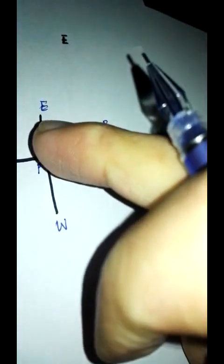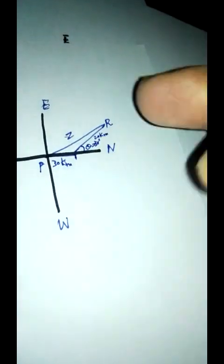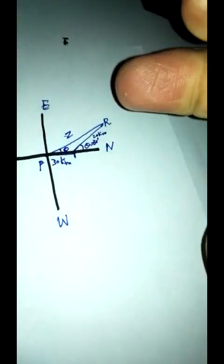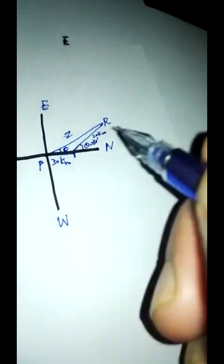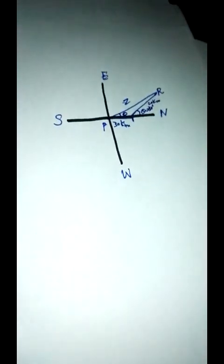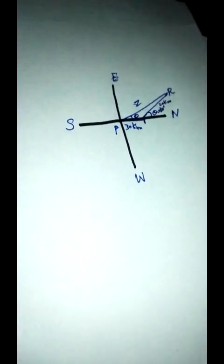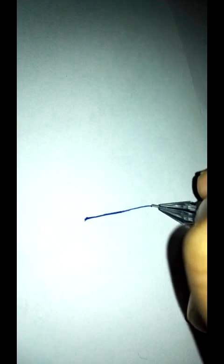This is R from the port P to point R. The port is here, P. Now point R is here. So this is the resultant.